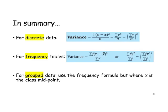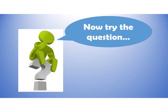In summary, for discrete data the variance is the sum of x minus x-bar all squared divided by n, which also equals the sum of x-squared divided by n minus the sum of x divided by n all squared — in other words, the mean of the squares minus the square of the mean. For frequency tables, we use the sum of f times x minus x-bar all squared divided by the sum of f, or the friendly version: the sum of f times x-squared divided by the sum of f, minus the sum of f times x divided by the sum of f, all squared. For grouped data, use the frequency formula but x is now the class midpoint. Now have a go at the question.